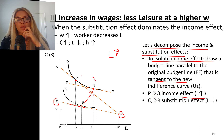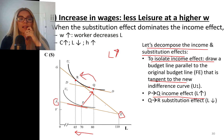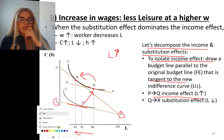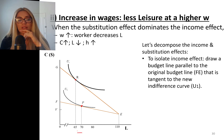The substitution effect is the Q to R movement — it says to decrease leisure way down. The substitution effect wins in this case. Looking at the final result, P to R is the final outcome: leisure went down from 70 to 65, consumption went way up, and hours of work went up.